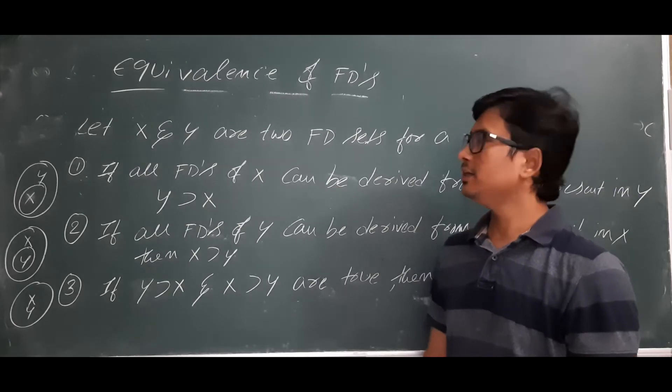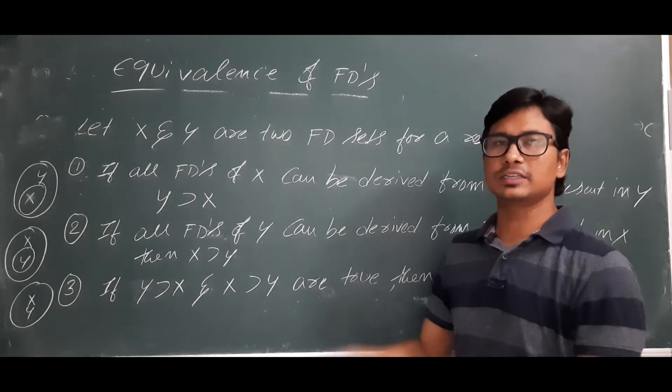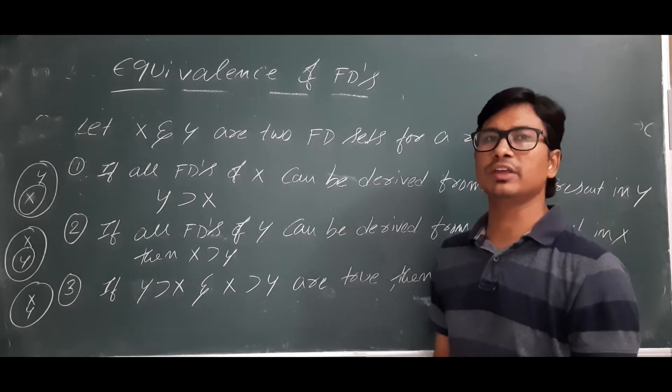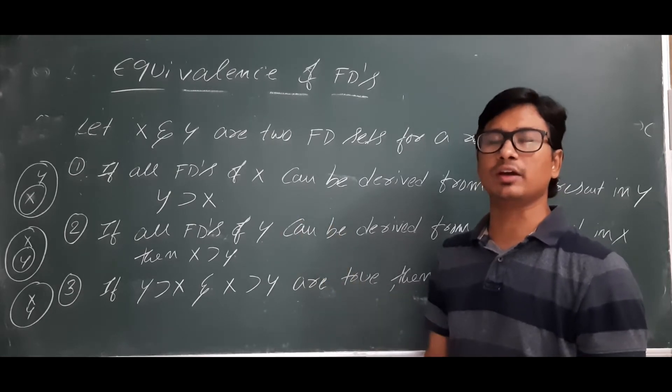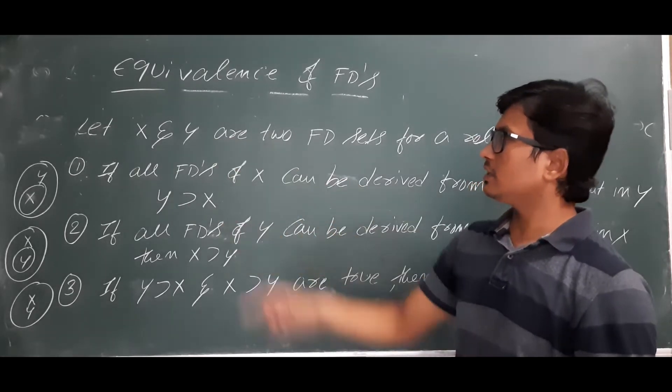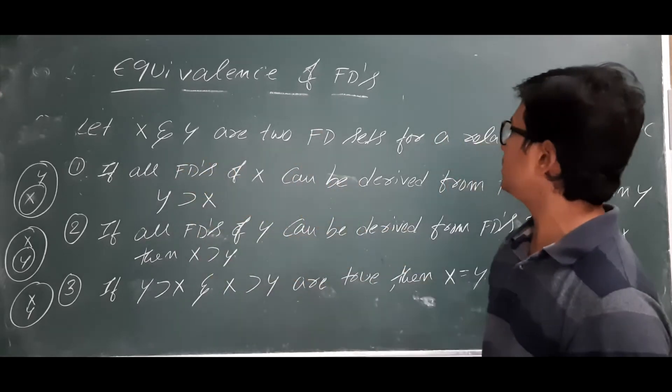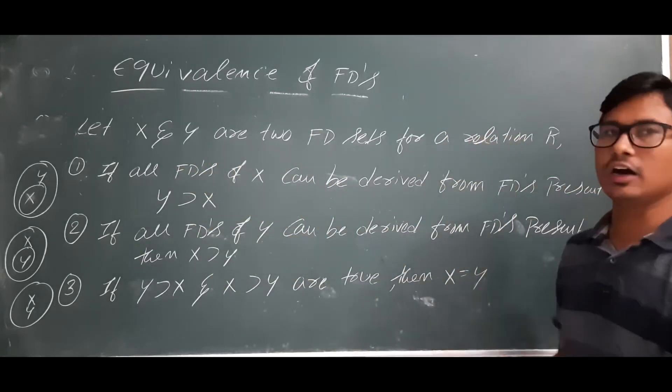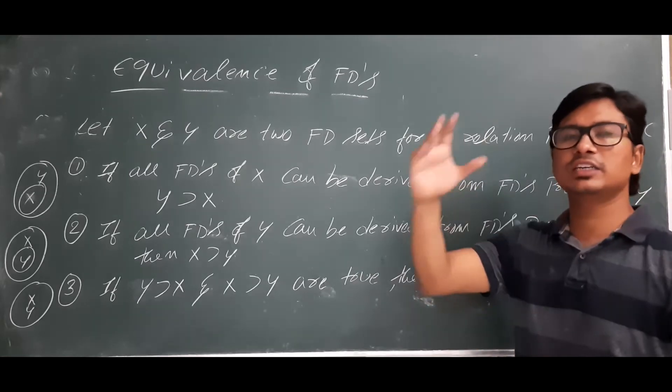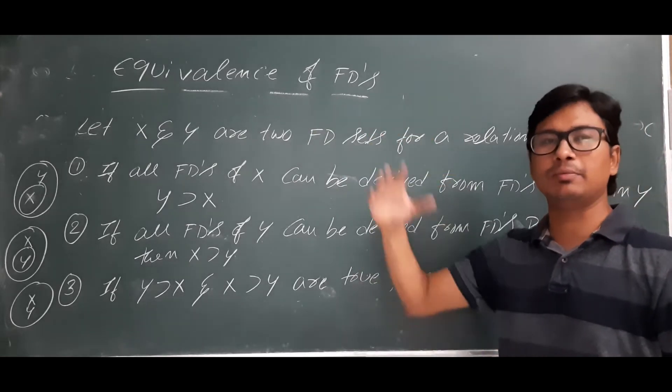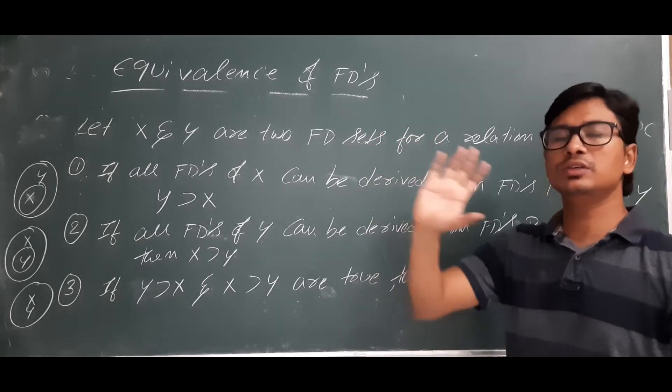Good morning students. In this video, we will discuss the steps to check whether two FD's are equivalent or not. Let's say X and Y are two FD sets for a relation R. Relation R consists of some attributes A, B, C, T. Using those attributes and the relation, they have found two sets of FD's.